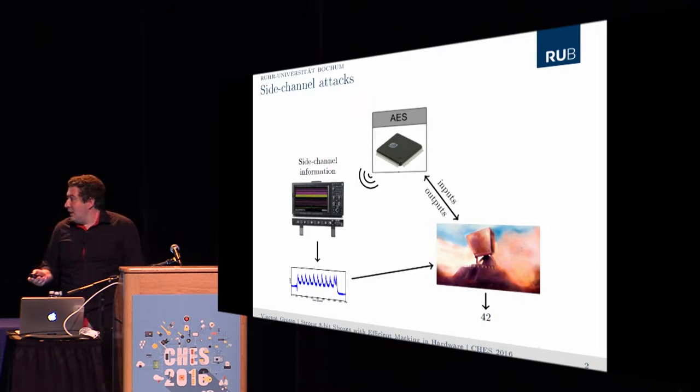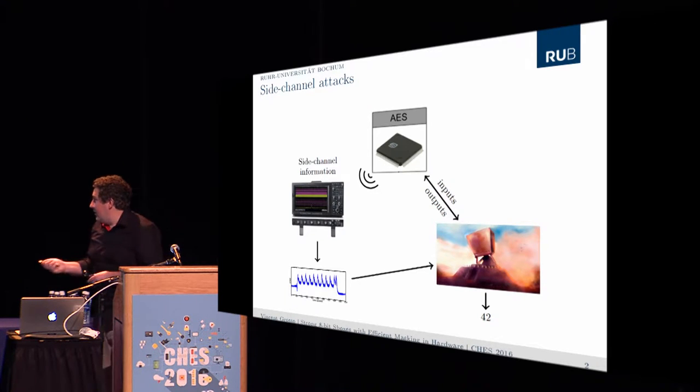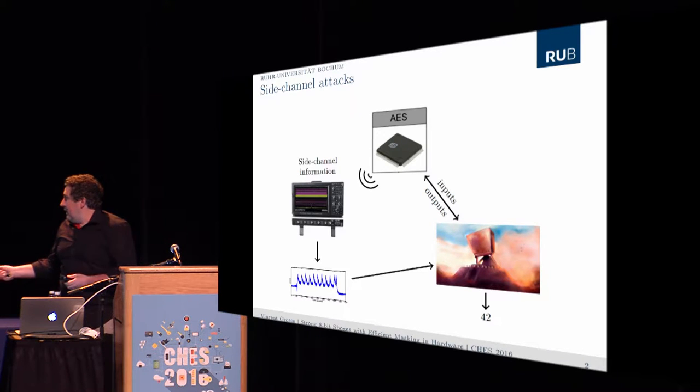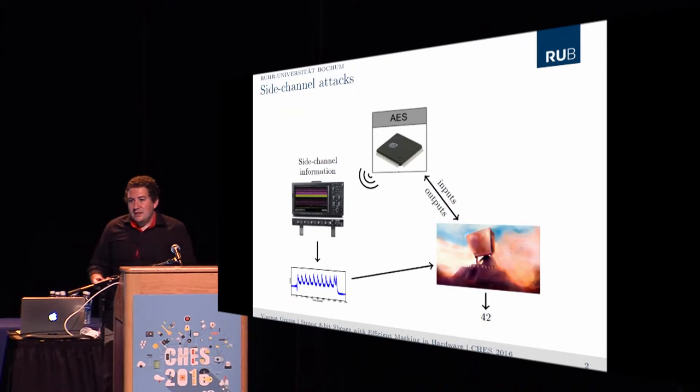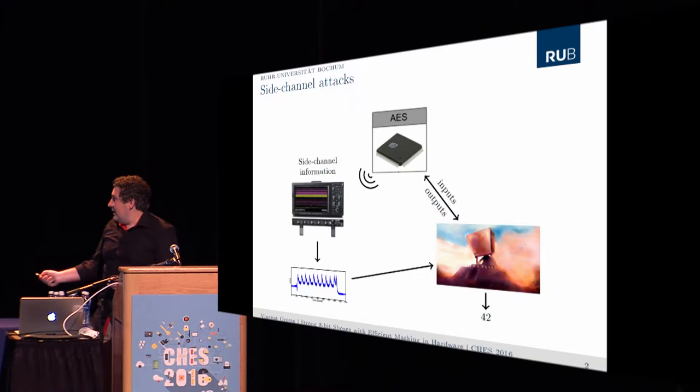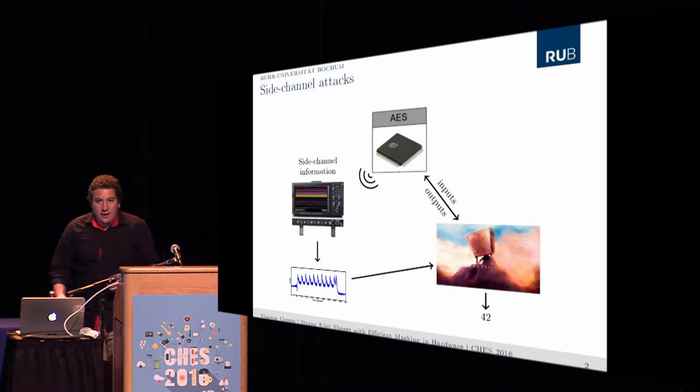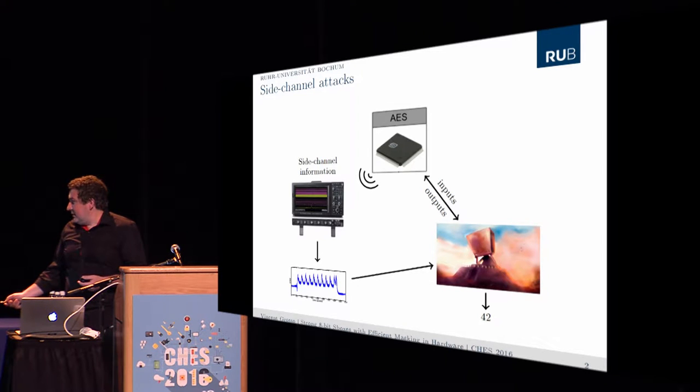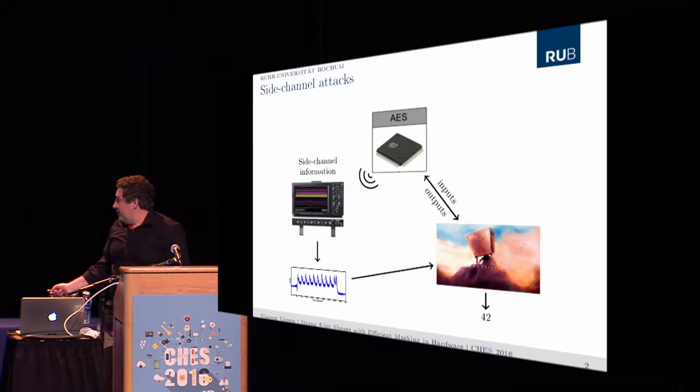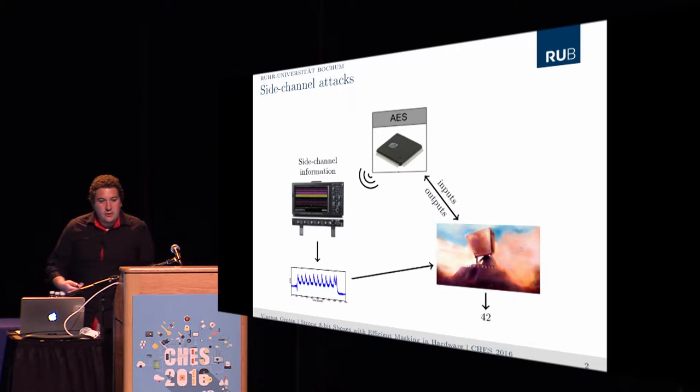In the black box model, we have our adversary that makes some requests to some black box, it has to do some computation, and you have to make a lot of time before you recover the key. In the side-channel model, we allow the adversary to observe the device that implements the algorithm. This device will require some time, some power consumption to perform the operation. If the adversary monitors this through an oscilloscope, it will obtain some traces. With the help of the traces, we know since the late 90s that key recovery can be really practical.